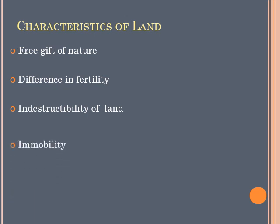The next characteristic is immobility. Immobility means that land cannot be shifted from one place to another; therefore it does not have the property of geographical mobility. Land is fixed and it cannot be moved.